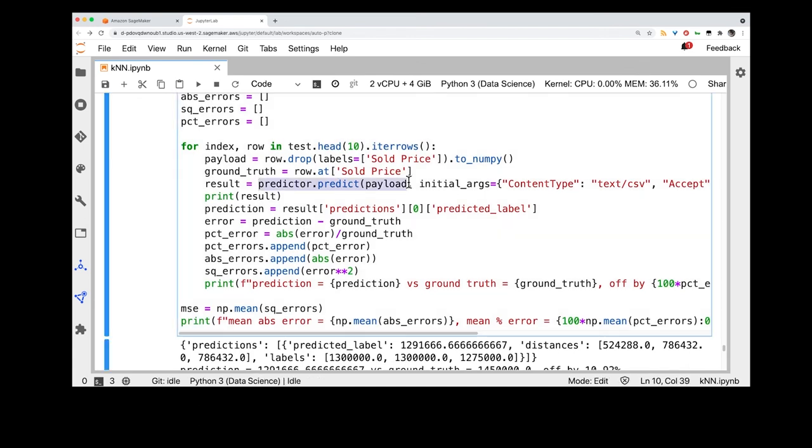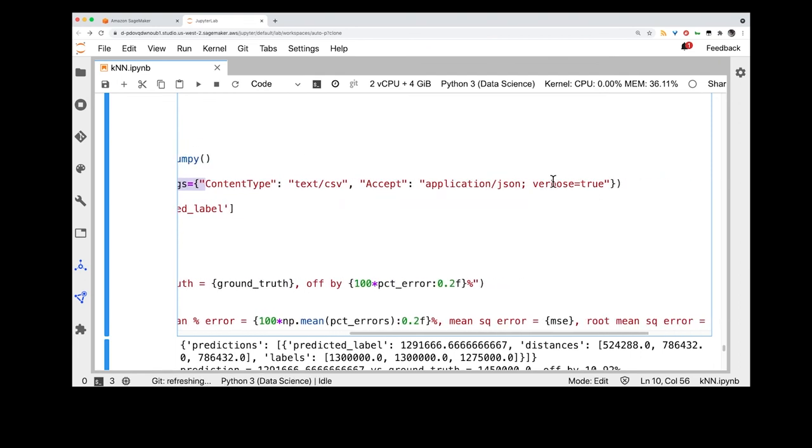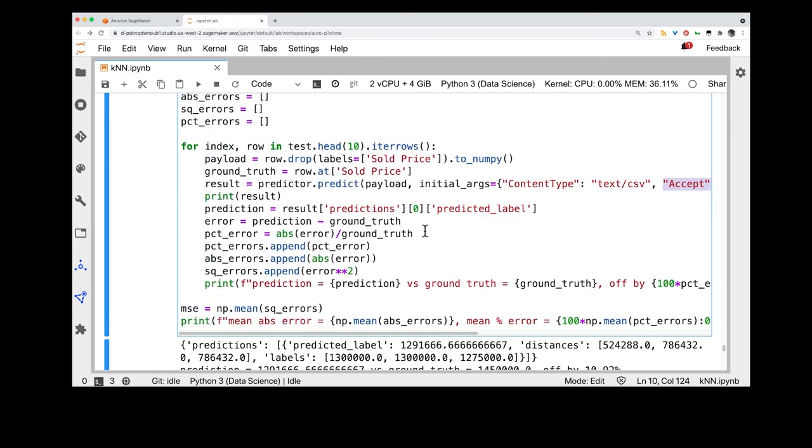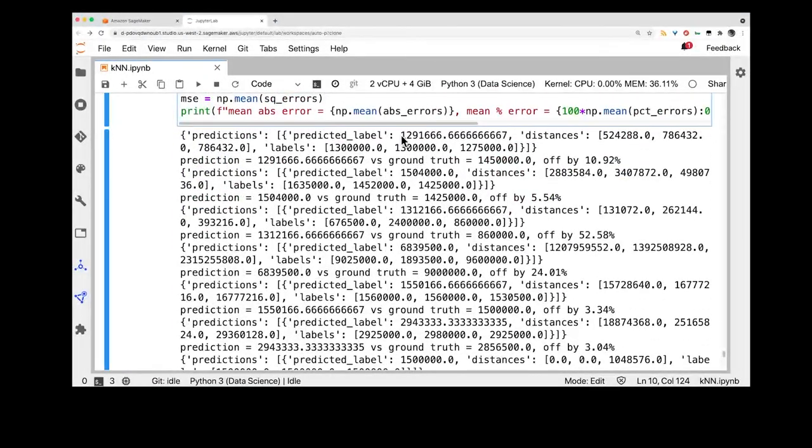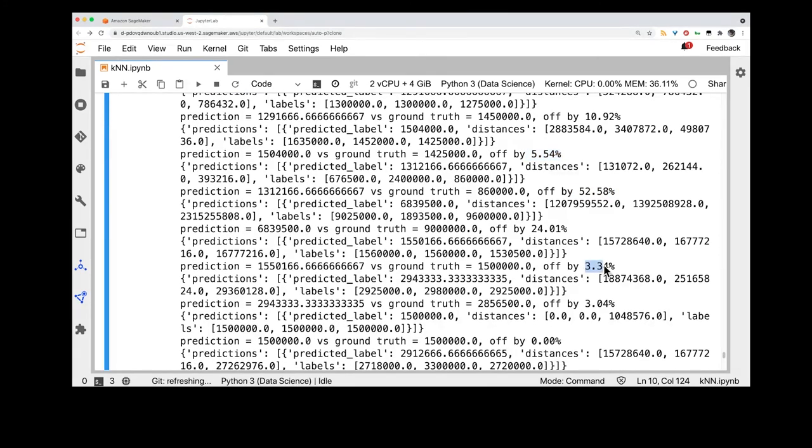We set up an endpoint and run our own assessment against it by using the predict function. Note that in order to enable the KNN model to print the selected neighbors, we must add verbose equals true in the predict arguments. Here you see the predicted label, but also the neighbor distances and labels as well. We see that sometimes our predictor is off by a lot, and other times it's pretty close, off by only single-digit percentages. Not bad considering we did not yet take into account categorical variables and text descriptions. And this concludes our quick demo.